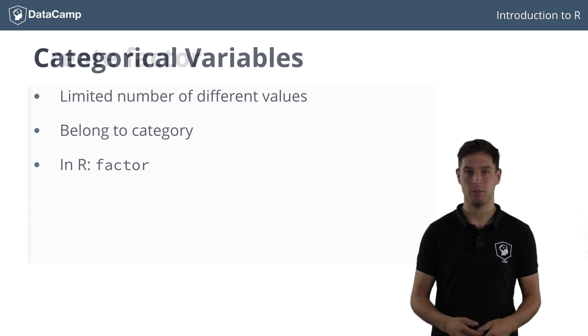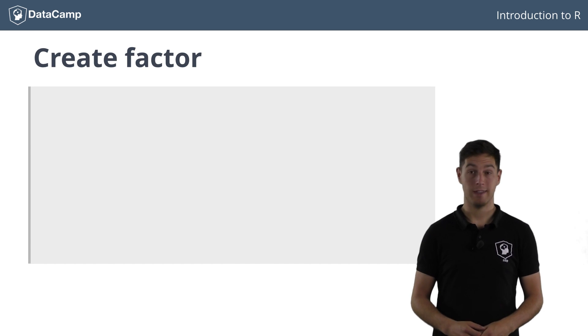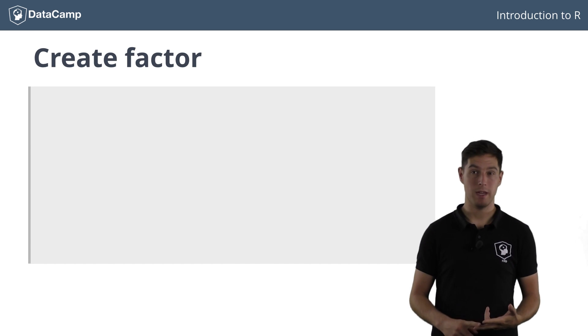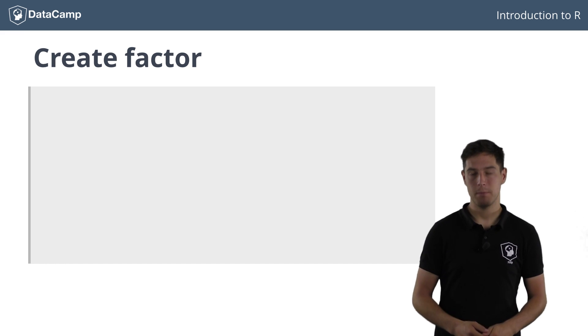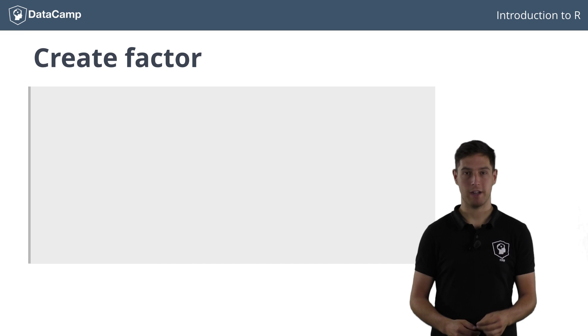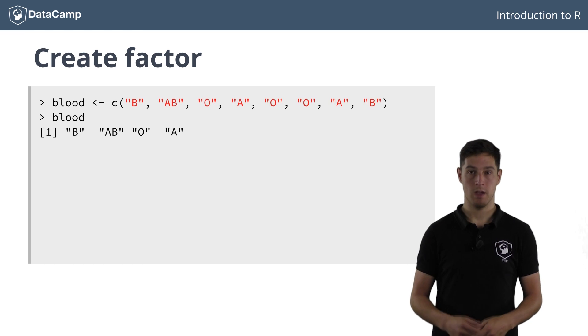A good example of a categorical variable is a person's blood type. It can be A, B, AB or O. Suppose you have asked 8 people what their blood type is and recorded the information as a vector blood. Now, for R it is not yet clear that you're dealing with categorical variables, or factors here.